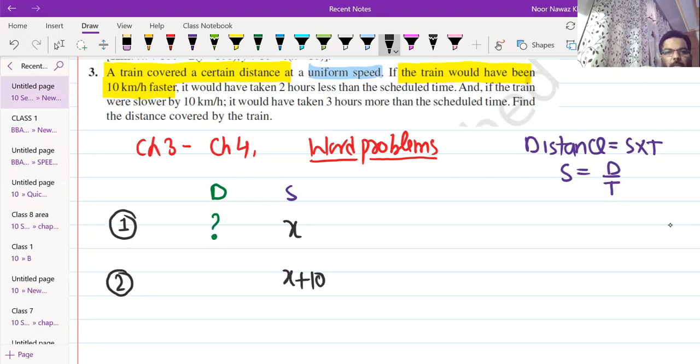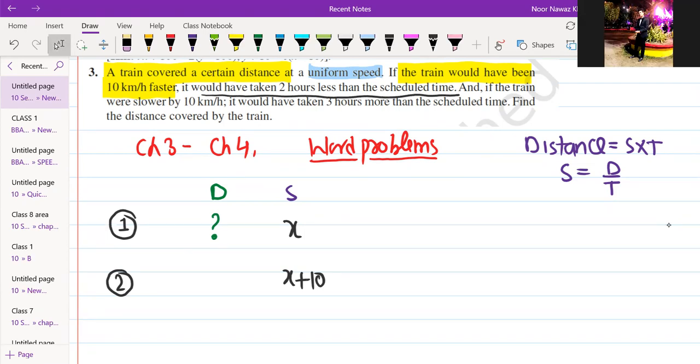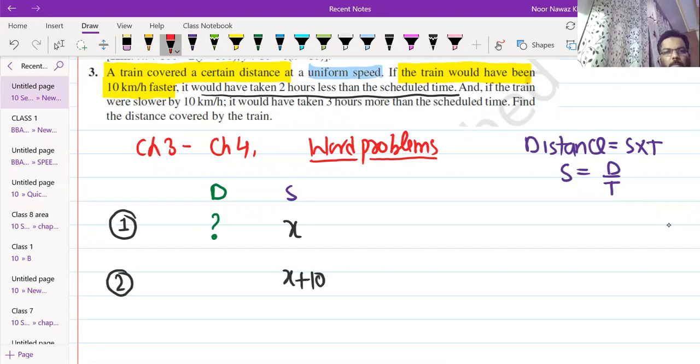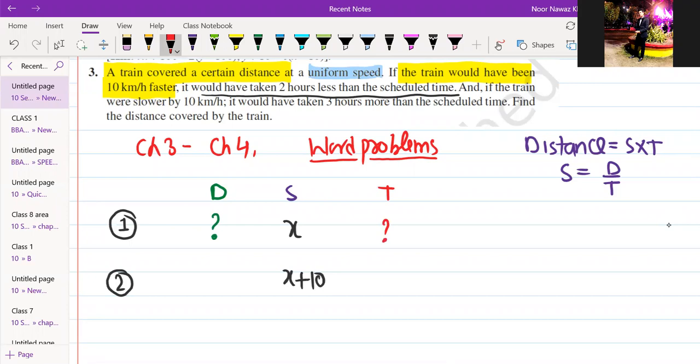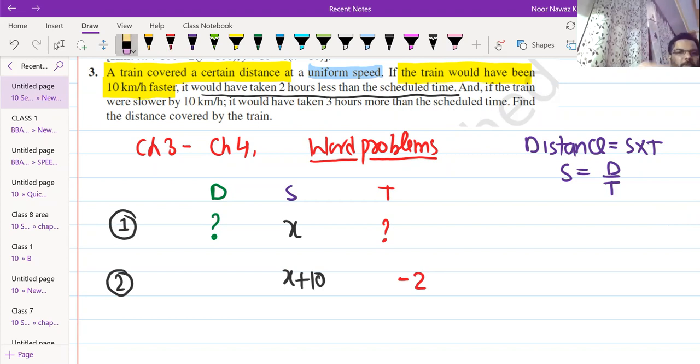It would have taken two hours less than the scheduled time. We don't have time either. Suppose we have some time. Now in this case when the speed is faster, time will be two hours less. So two hours will be subtracted. For the same journey.